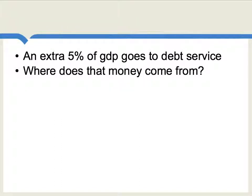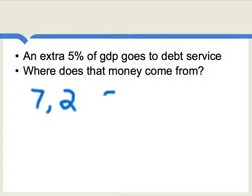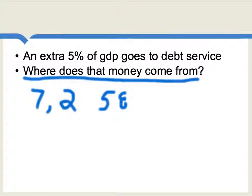Over time, this country is borrowing more at 7% and less at 2%. So in the steady state, there is 5% of GDP which is now going into debt service that was not going into debt service in the first place. And the key question is: where does that money come from? This will be a source of the problem.